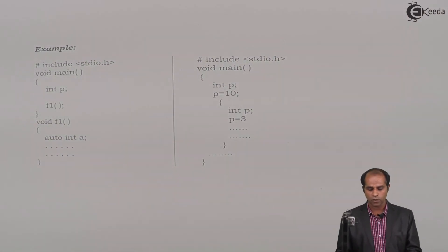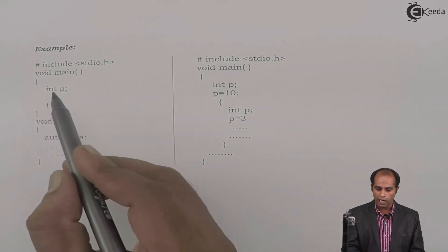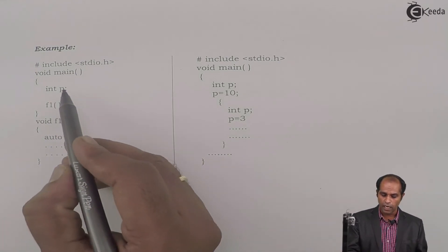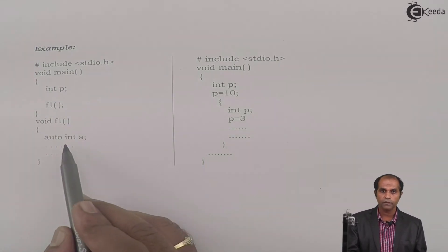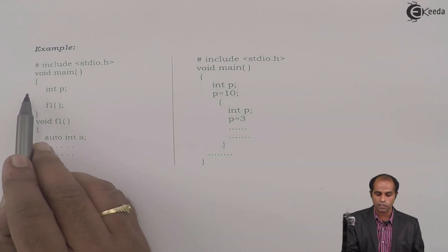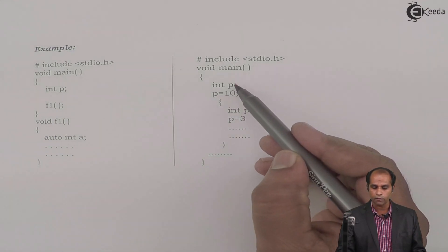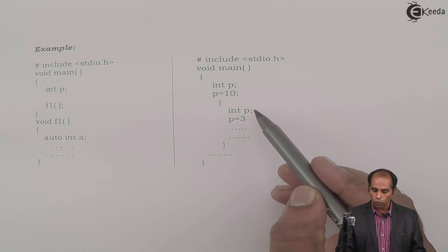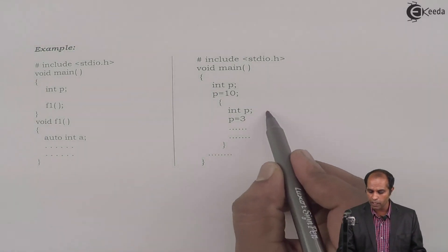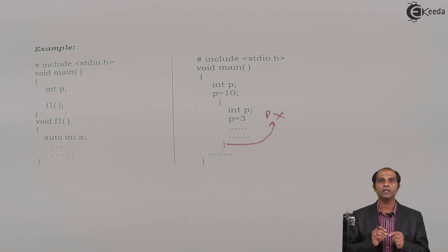Here are two examples illustrating this storage class. In the first, p is declared in main and a is declared in f1 — a is local to f1, p is local to main. Note that a has the explicit auto keyword but p does not, though p is still auto by default. In the second example with a block, an inner p initialized to 3 is valid only within that block and is destroyed when the block ends, while the outer p with value 10 remains alive outside the block.